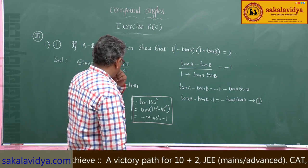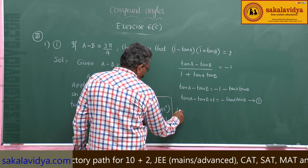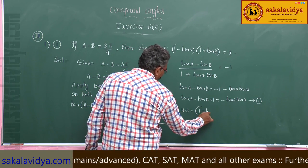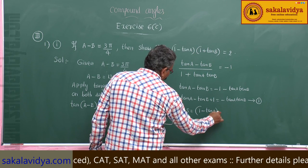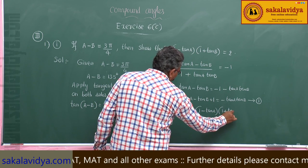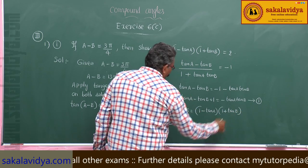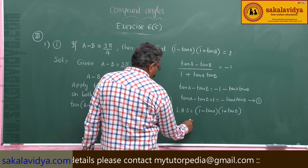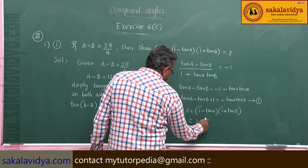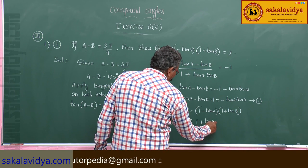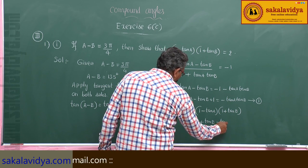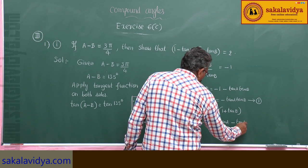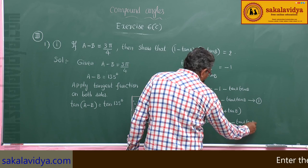Take the left hand side of the problem. The left hand side is 1 minus tan A into 1 plus tan B. Expanding: 1 plus tan B minus tan A minus tan A tan B.